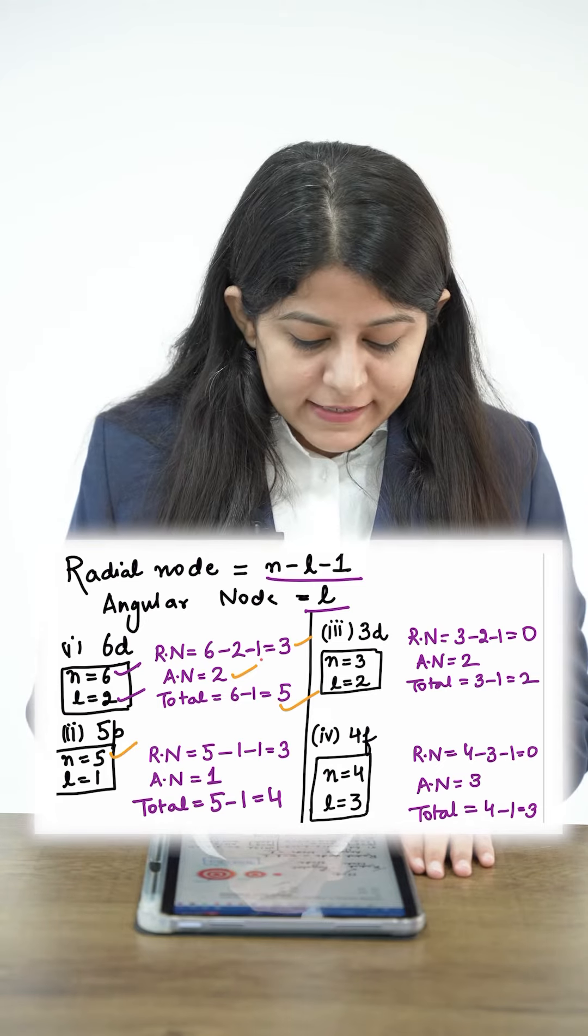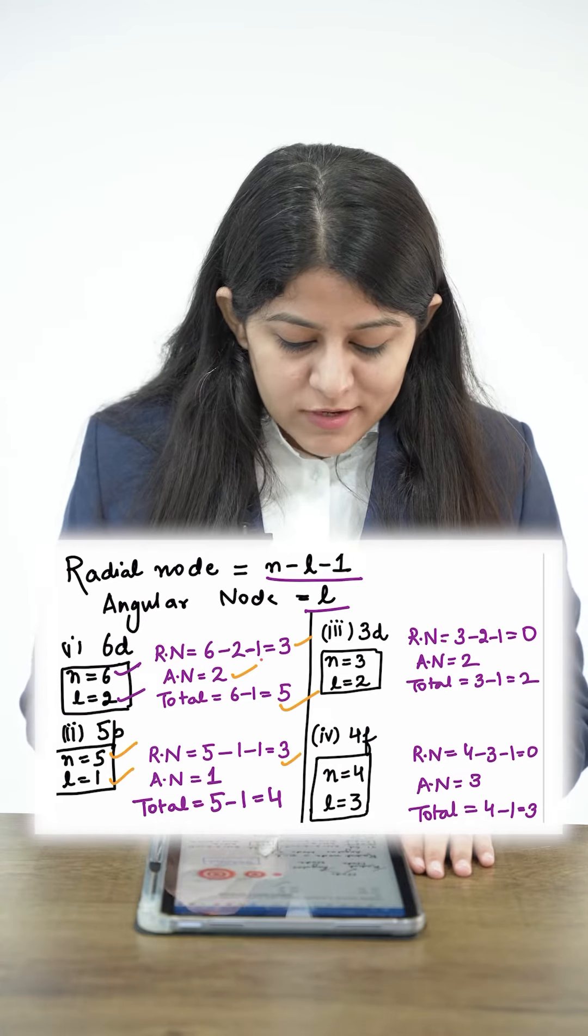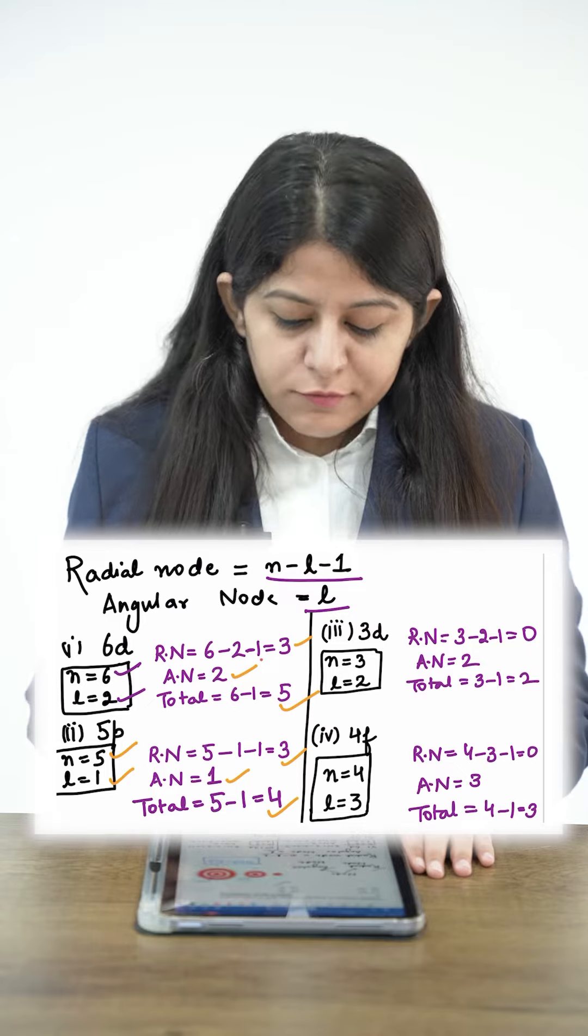5p: N is 5, L is 1. So radial nodes 3, angular nodes 1, and total nodes 4.